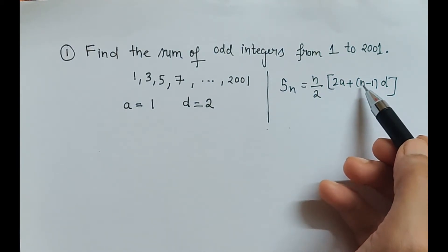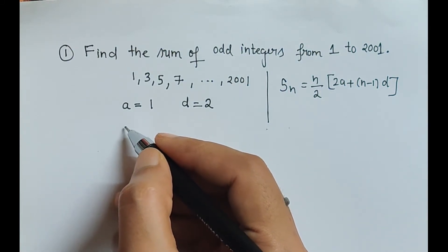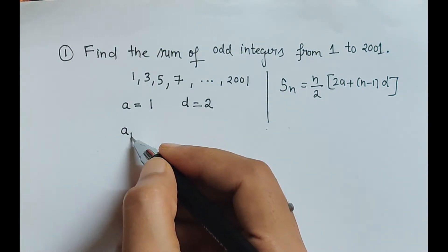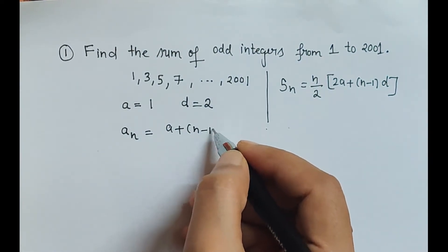We know what is a, we know what is d, but there is another term n which is to be calculated first. So let us find out that term. So here we will be using that first formula: an is equal to a plus n minus 1 into d.